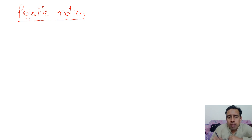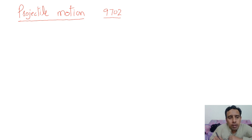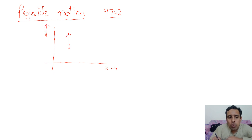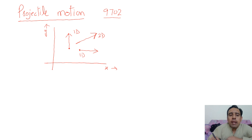Hello everyone, I'm Saeed. Today we are going to look at projectile motion. This is a very important topic for A-level physics — Cambridge 9702 AS levels. If we have an X axis and Y axis, a body moving along only one axis is called one-dimensional motion. If the body is moving along both X and Y, then it is two-dimensional motion, and all two-dimensional motions are called projectile motions.